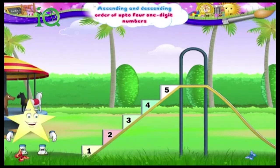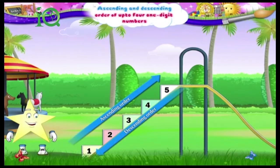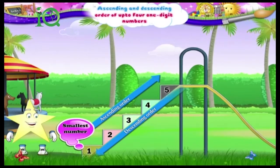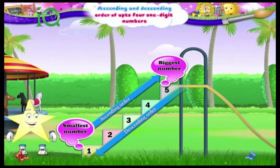When you have to arrange numbers in ascending or descending order, you first find the smallest and the biggest number. You then arrange the numbers in the middle in a similar manner.